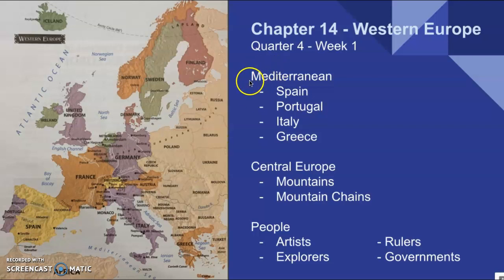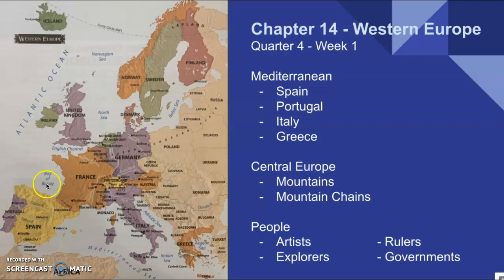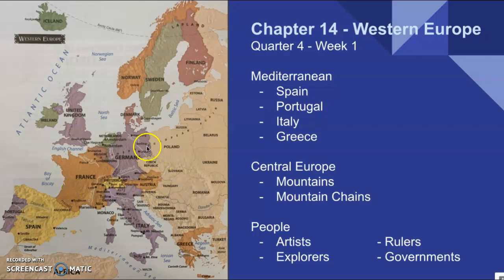Last week we talked about the Mediterranean countries of Spain, Portugal, Italy, and Greece. If you look on our map, Spain is in yellow and surrounds Portugal completely, with a little Bay of Biscay off to the side. Then we have Italy around the Mediterranean Sea, and Greece by the Aegean Sea and Mediterranean Sea. We also talked about Central Europe — the mountains and mountain chains — and for those four countries we discussed artists, explorers, different rulers, and the kinds of governments they have.